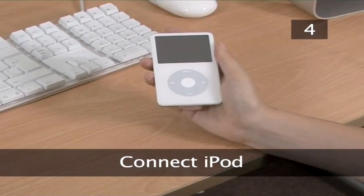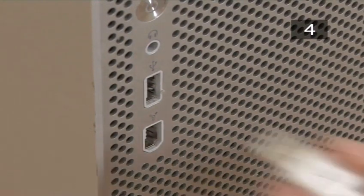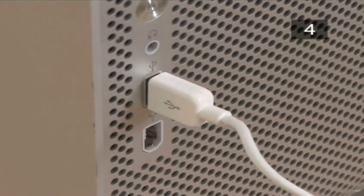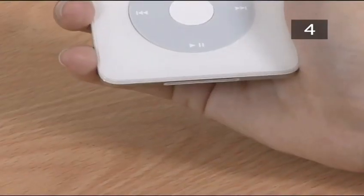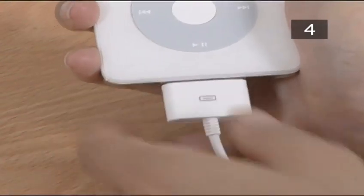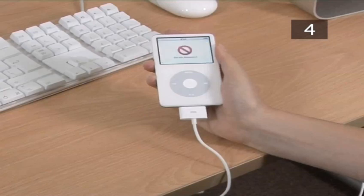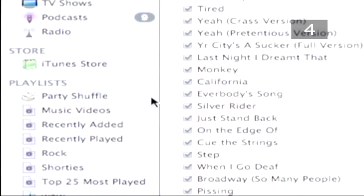Step 4: Connect iPod. Plug the smaller end of the cable, which is the USB connector, into the USB port of your computer — this can be identified by the USB logo. Plug the other end of the cable, which is called the dock connector, into the base of your iPod. A Do Not Disconnect message will show up on your iPod screen, and your iPod icon will appear in the library list in iTunes.